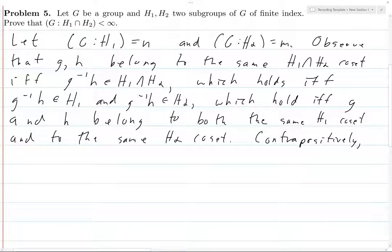Okay, so contrapositively, what's the contrapositive of what we just proved? Instead of if h and g belong to the same H1 intersect H2 coset then they belong to the same H1 and H2 coset, the contrapositive says, well, I guess the contrapositive. Because this is an if and only if, you can just negate both statements and that's what I mean by contrapositively here.